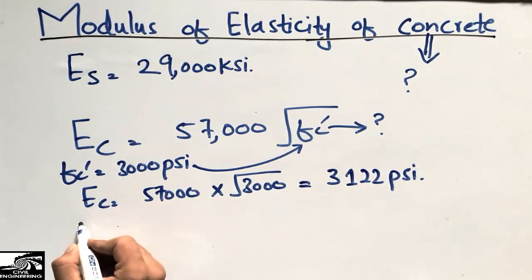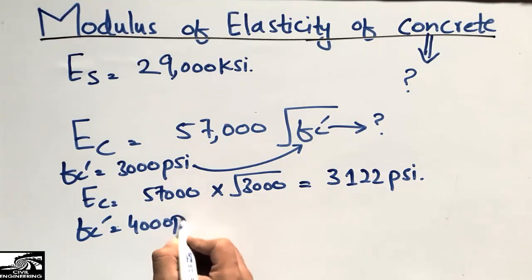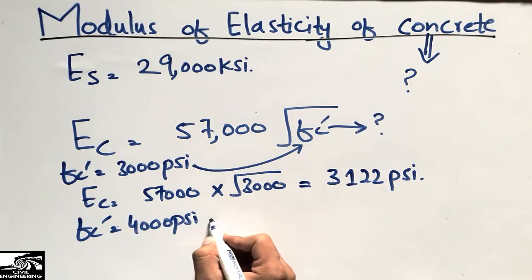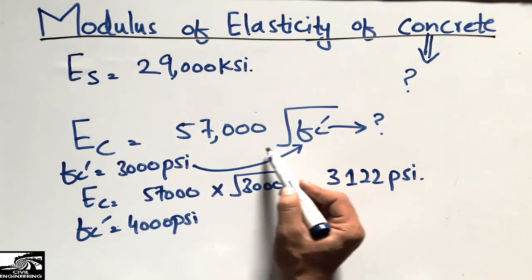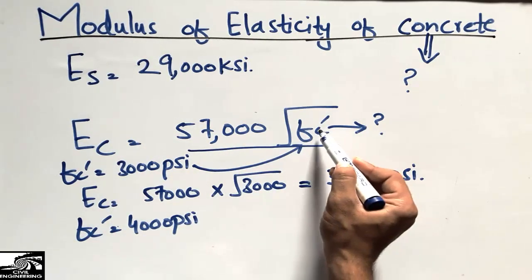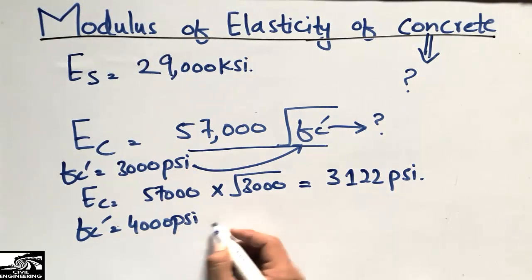For grade 4,000 psi, we have different elasticity of the concrete because it depends on this relation. The more the strength of the concrete, the higher will be the elasticity of the concrete.